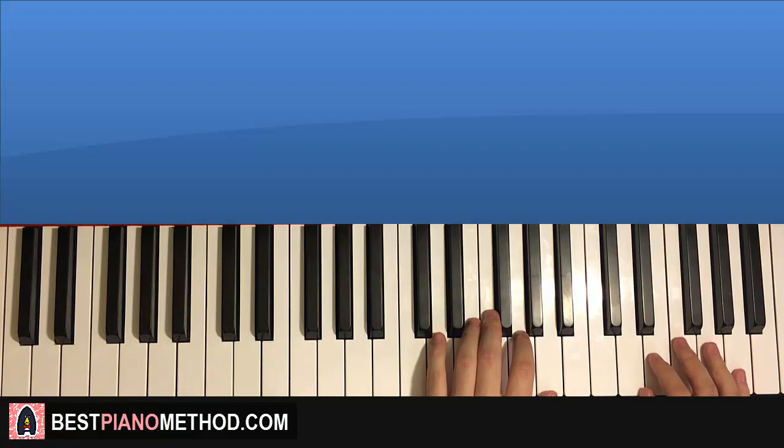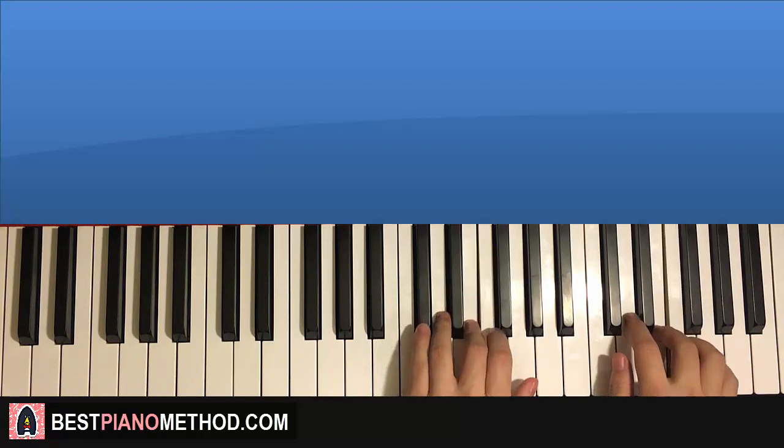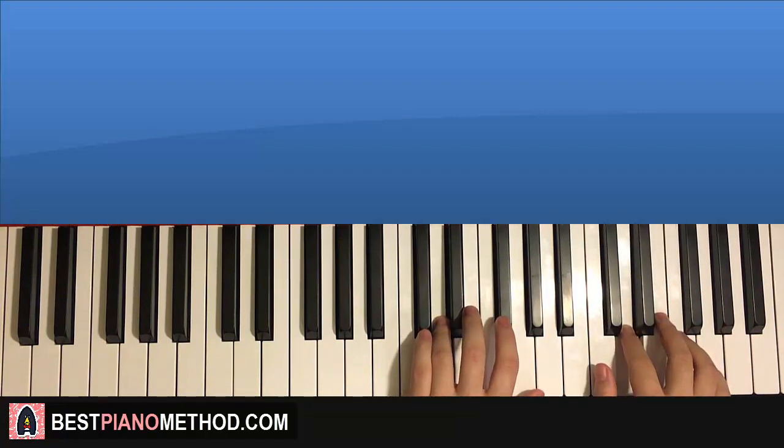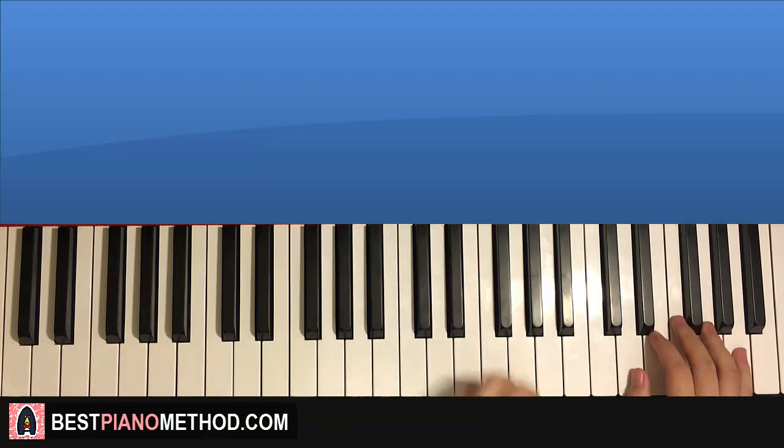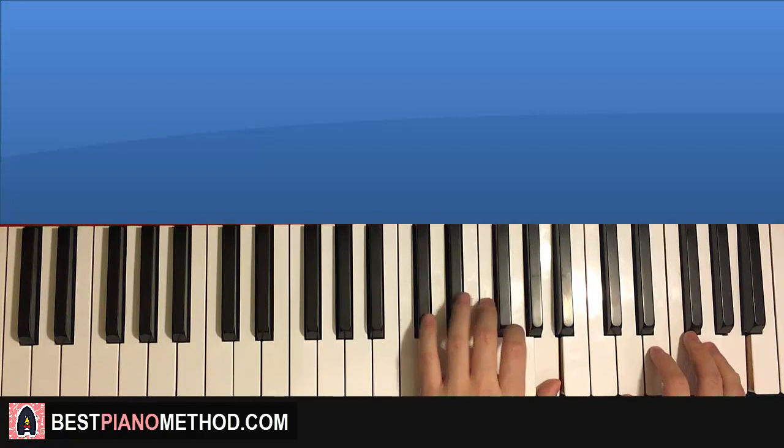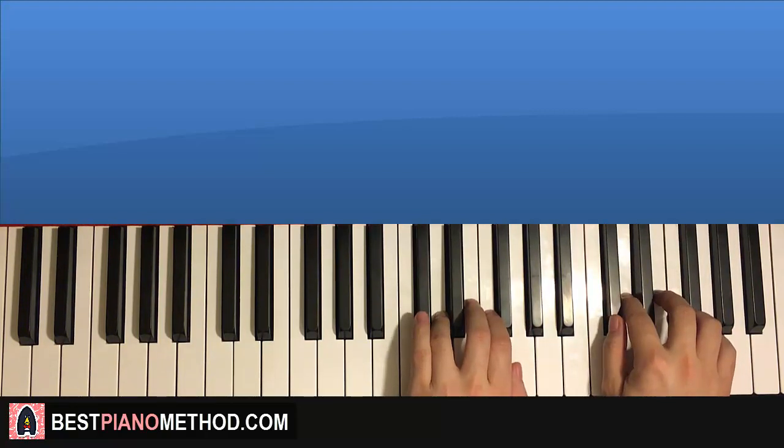This is what we're doing: it goes A, G, A, and then it goes G, F, E, D, C sharp, D. That's the first part. One more time for this first part, let's do it again. So it goes like this: A, G, A, G, F, E, D, C sharp, D.